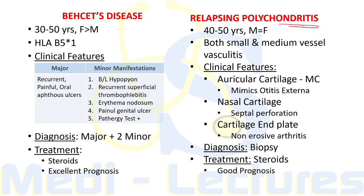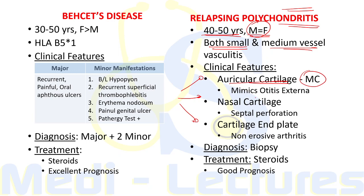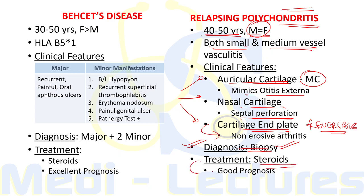The last condition is Relapsing Polychondritis — an ANCA-negative small vessel vasculitis usually occurring in the 40 to 50 years age group with equal distribution in males and females. It involves both small and medium vessels. Clinical features depend on the cartilage involved: auricular cartilage involvement mimics otitis externa, nasal cartilage involvement leads to septal perforation, and joint cartilage involvement leads to non-erosive reversible arthritis. Diagnosis is made via biopsy, and treatment is through steroids with good prognosis. This concludes the lecture covering all major vasculitis conditions.